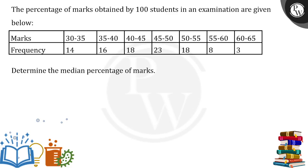The percentage of marks obtained by 100 students in an examination are given below. They have given the marks and the frequency — for example, between 30 to 35, 14 students scored; between 35 to 40, there were 16, and so on. Now we have to determine the median percentage of the marks.